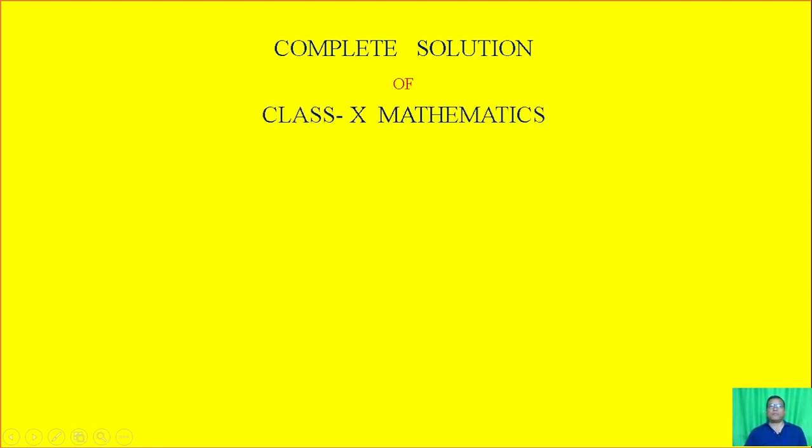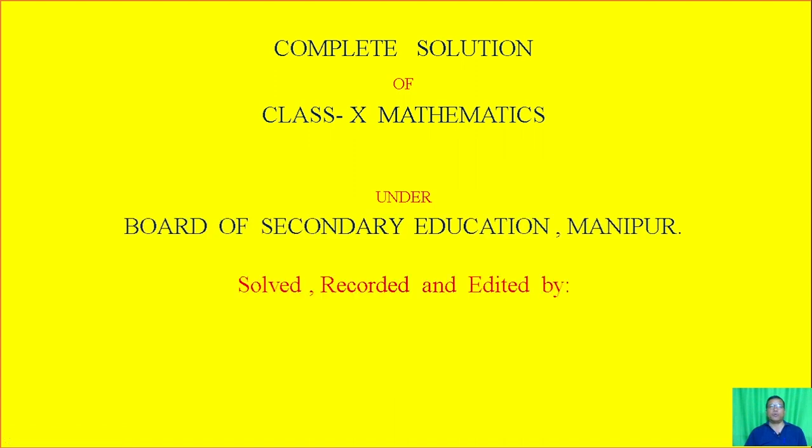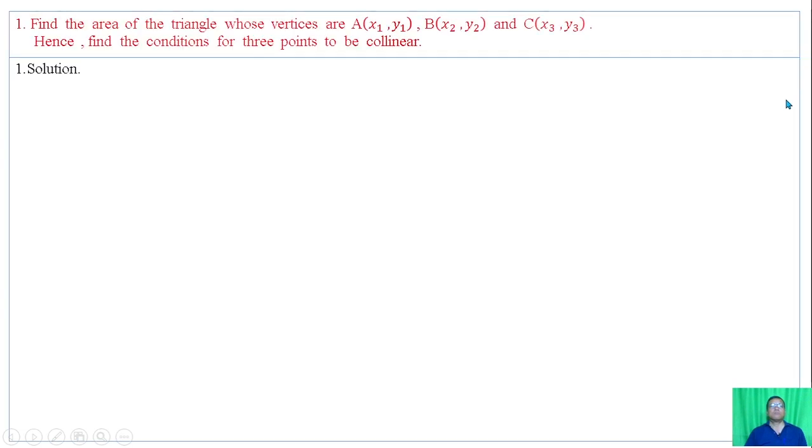Complete solutions of class 10 mathematics under the Board of Secondary Education Manipur. Solved, recorded and edited by I.S.M.S.S.S. Find area of the triangle whose vertices are A(x1, y1), B(x2, y2), and C(x3, y3). Hence, find the conditions for three points to be collinear.